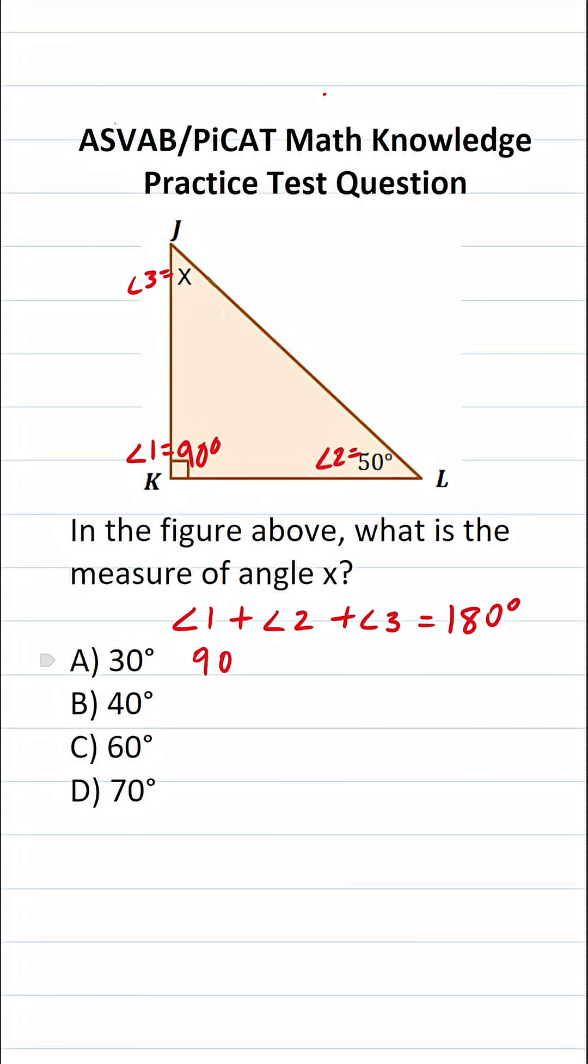This becomes 90 plus 50 plus X equals 180. 90 and 50 is going to be 140 plus X equals 180.